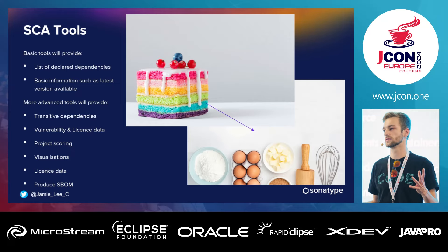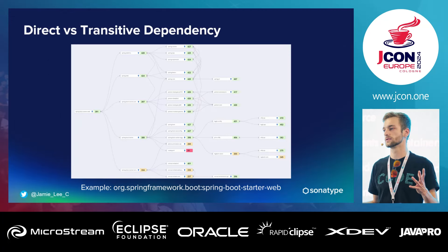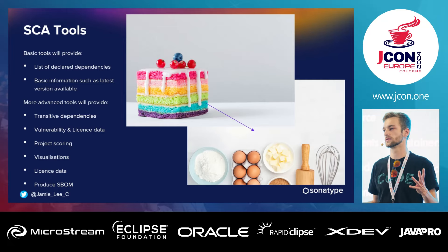A basic software composition analysis tool will look at your declared dependencies and give you basic information such as the latest version available — similar to what Dependabot does. More advanced tools look at transitive dependencies, vulnerability and license data, project scoring, visualizations, and can produce software bill of materials. Project scoring is a new thing: OpenSSF and other foundations are creating frameworks to score open source projects and help people adhere to better programming practices.